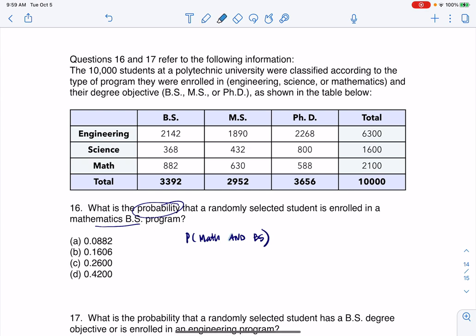Anytime you have an 'and', you have to calculate the probability. On a table, that means look for where the row and column overlap, and I can see that is 882.